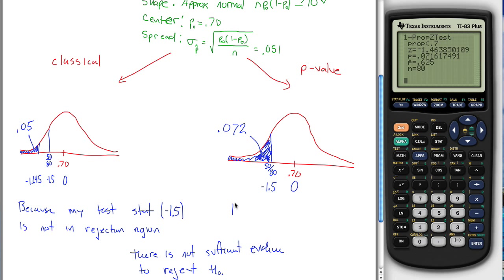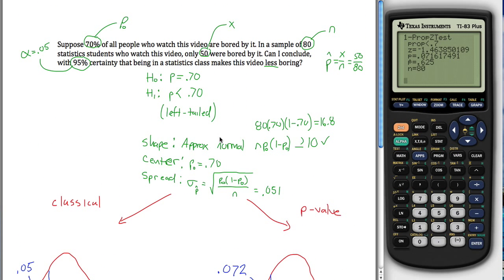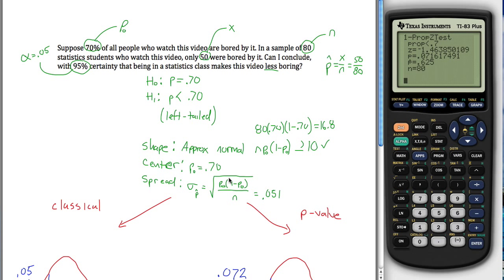So when we're drawing our conclusion, we would say because my p-value, which in this case was 0.072, is greater than alpha, because the p-value is greater than alpha, there is not sufficient evidence to reject the null hypothesis. So p-value, here's your picture, here's your conclusion. Classical, here's your picture, here's your conclusion. Key thing to know is that you'll always get the same conclusion. So there's the two different methods dealing with a one-proportion z-test.